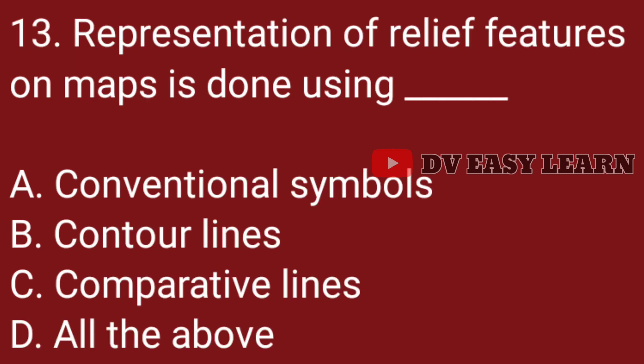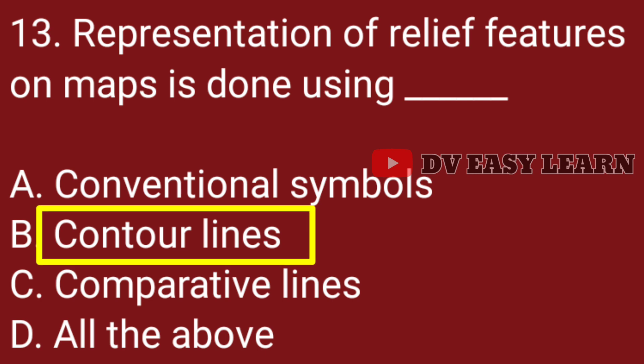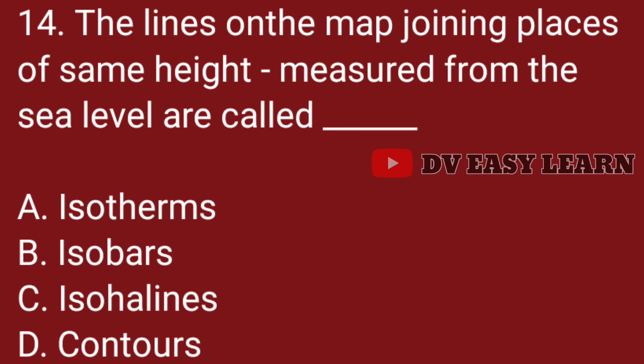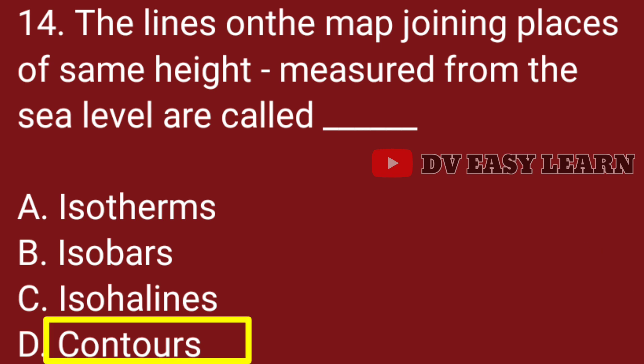Question no. 13. Representation of relief features on maps is done using: Correct answer: contour lines. Question no. 14. The lines on the map joining the places of same height measured from sea level are called: Correct answer: contours.